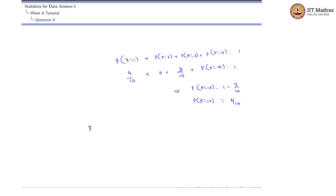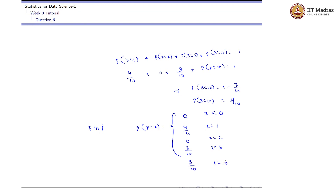So the PMF is: P(X = x) = 0 for x < 1, 4/10 for x = 1, 0 for x = 2, 3/10 for x = 3, 3/10 for x = 10, and 0 for all other values of x. This is the probability mass function of the given cumulative distribution function.